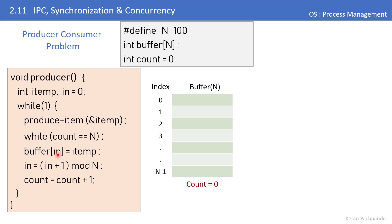Then the producer writes the item to `buffer[in]`, increments the index using `in = (in + 1) % N` — the modulo N resets the index back to 0 once it reaches 99, just like in the cupcake analogy — and increments `count = count + 1`. Then the loop repeats to produce the next item.